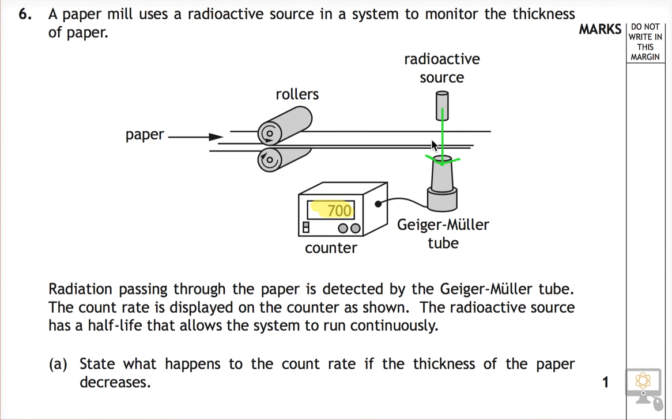Well, if there's less paper in here, if it's not as thick, then that means it's not absorbing the radiation as well and so more radiation will pass through to the GM tube and so the count rate will therefore increase.